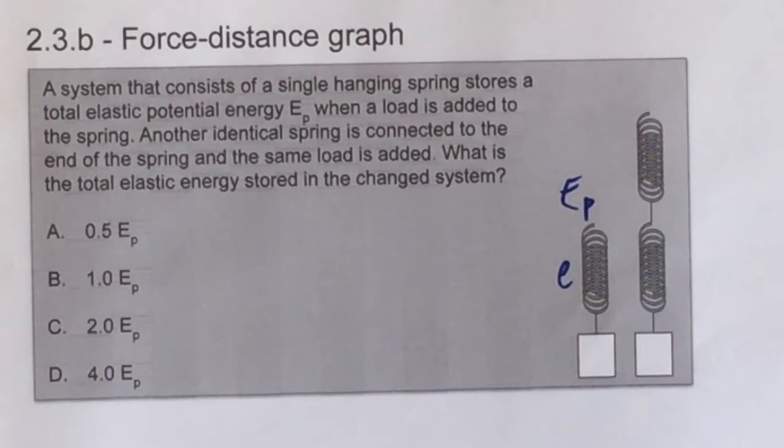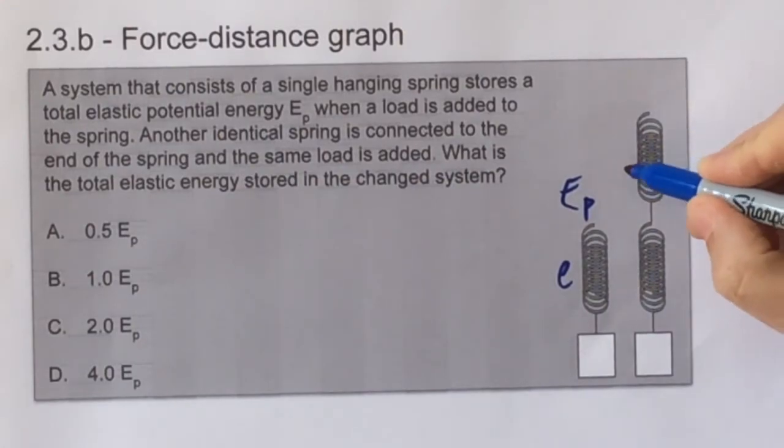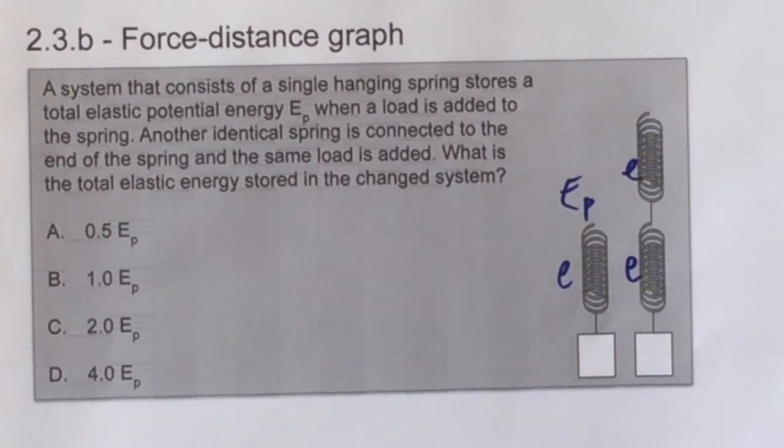When the two springs are in series with the same mass on the bottom, each of them is experiencing the same force and they're both extended by E. Or to put it another way, it's like a double length spring, and it's extended by 2E. Either way, each spring has the potential energy E_P in it, and therefore the answer is C.